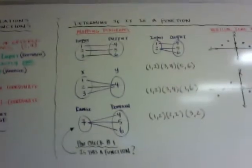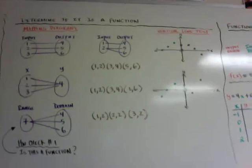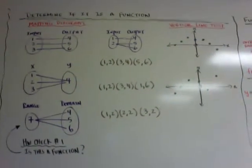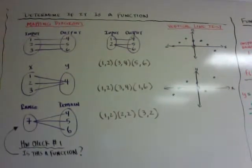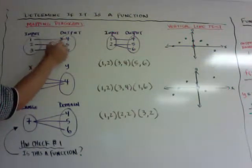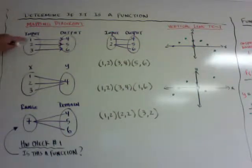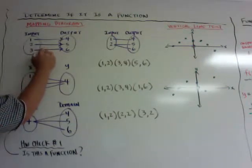Now let's look at determining if something is a function. The first way is by using a mapping diagram. The definition of function is each input has exactly one output. If you draw arrows from input to output, and each input has only one arrow going out of it, then it is a function. So this first example — yes, it is a function.